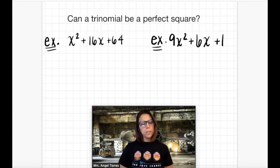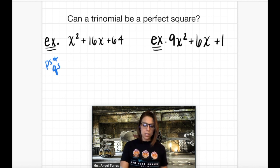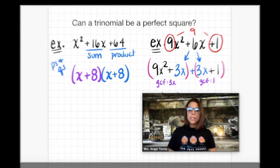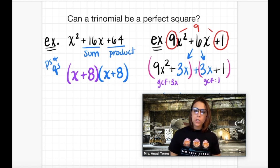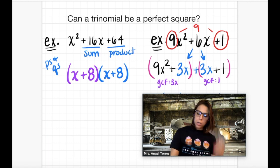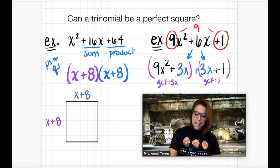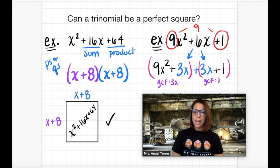Can a trinomial be a perfect square? Let's find out. We have two examples. We're going to factor these using methods we're comfortable with and see if they end up being perfect squares. In the first one, we're going to factor using p's and q's because it's a trinomial without a leading coefficient. The two numbers that have a sum of 16 and a product of 64 are 8 and 8, meaning my two binomials are x plus 8 and x plus 8. If I put this into a rectangle with width x plus 8 and length x plus 8, those are the same — meaning this is a perfect square. The trinomial x squared plus 16x plus 64 does indeed create a perfect square.